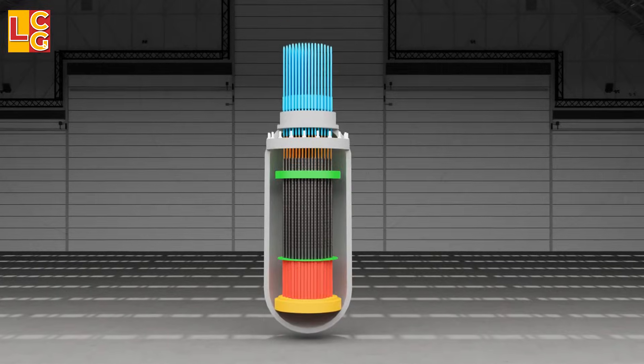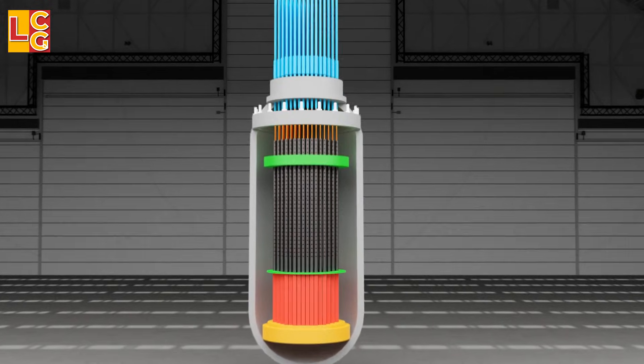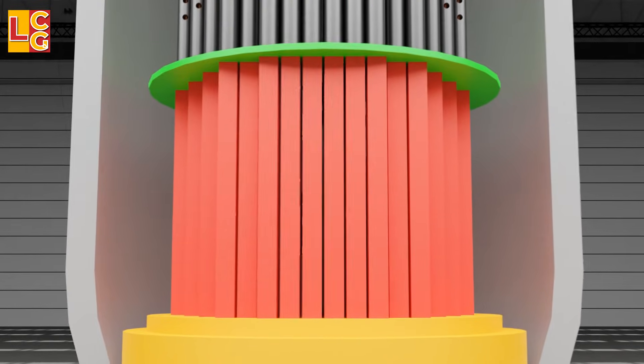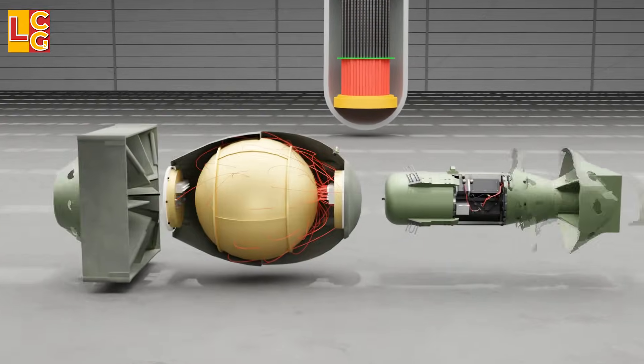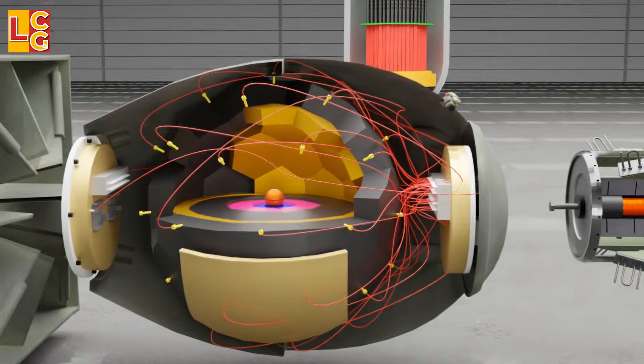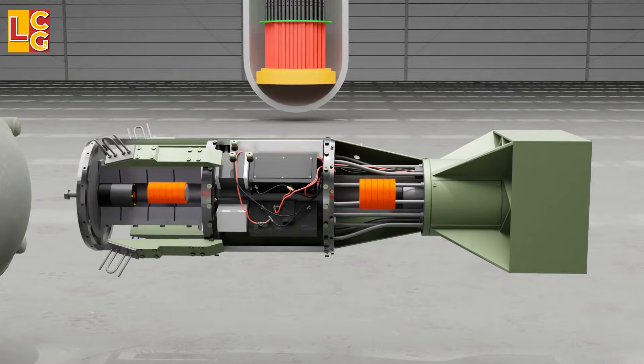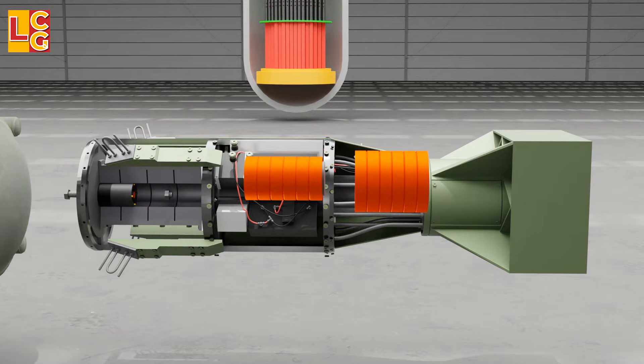But if there's a fission chain reaction in a nuclear reactor, why does it not explode like atomic bombs? Well, the atomic bombs Little Boy and Fat Man have uranium and plutonium that are compact and dense, so when a fission occurs, it results in uncontrolled fission chain reaction.